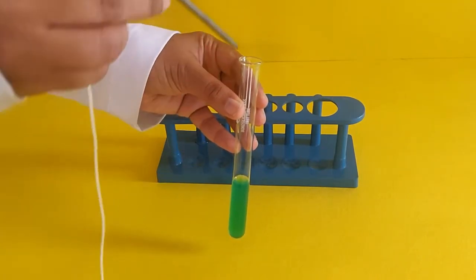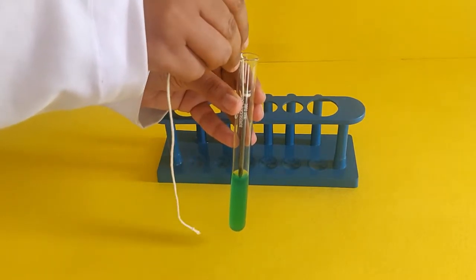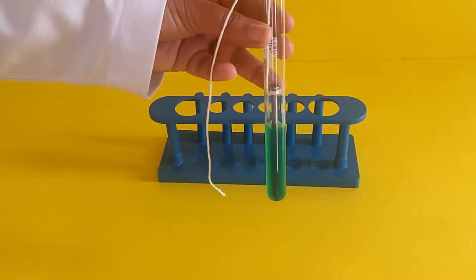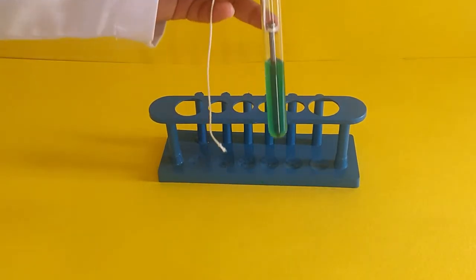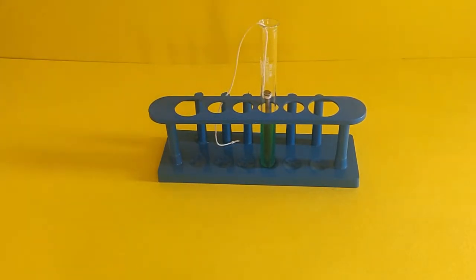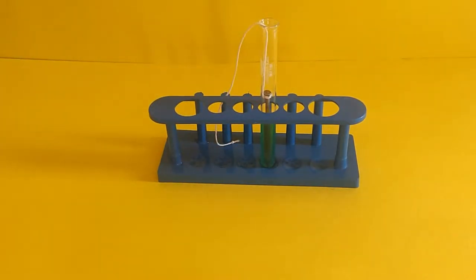Lower the nail into the copper sulfate solution in the test tube using the thread tied to it. Rest the test tube in the test tube stand or a tumbler and leave the nail in the copper sulfate solution for a few minutes.